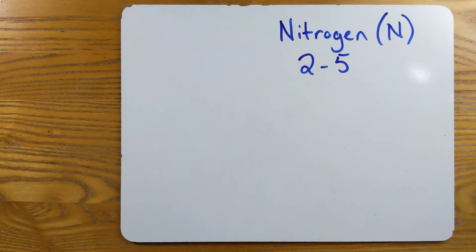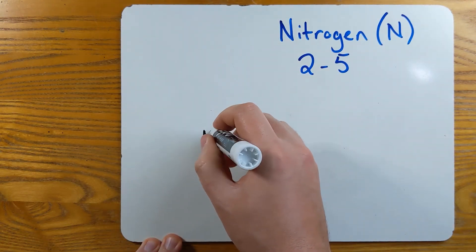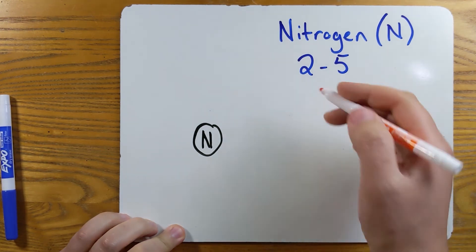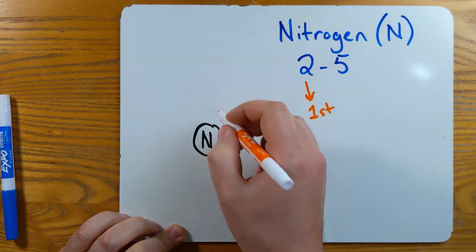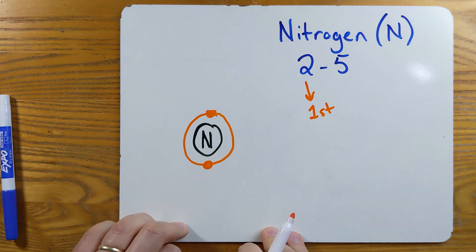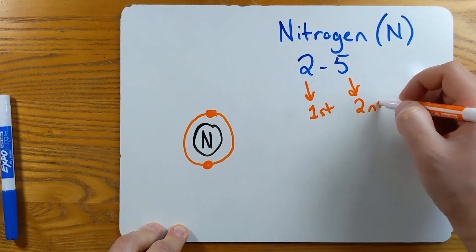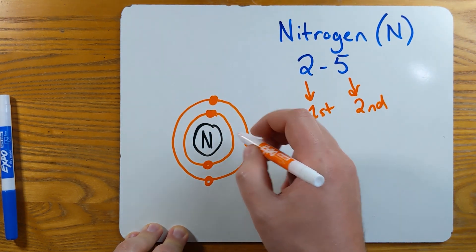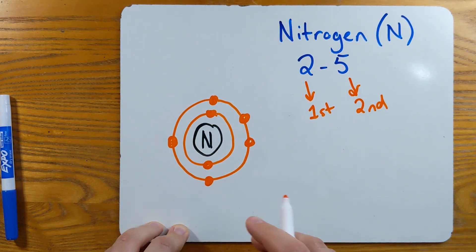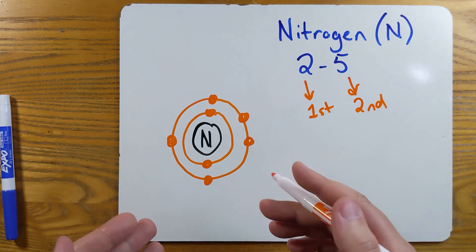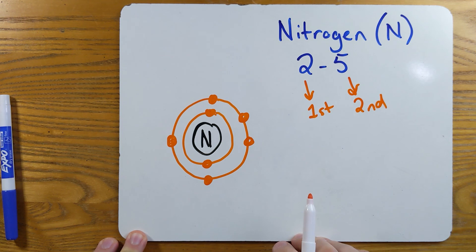Now I can start drawing the Bohr model. I'll draw my nucleus with the element symbol N. Now I'm going to start drawing my electron energy levels. The first energy level has two electrons — and you'll start noticing that the first energy level will only have up to two electrons. My second energy level has five electrons: one, two, three, four, five. It really doesn't matter where you put the dots, as long as you have the right number of electrons for each energy level.